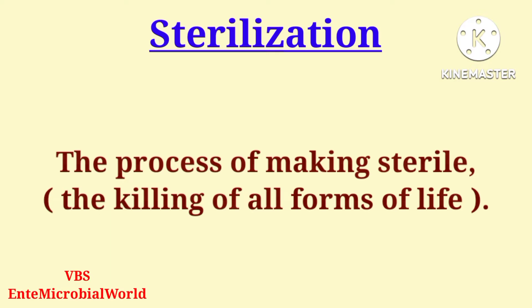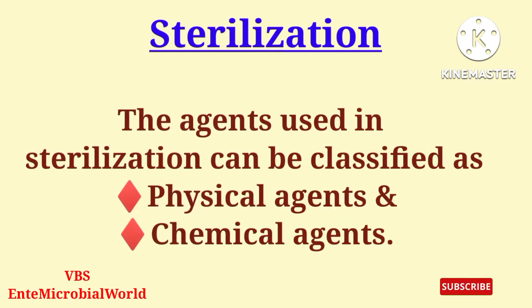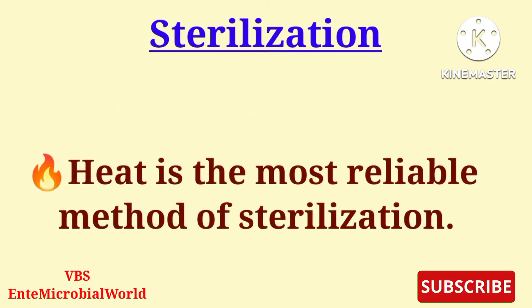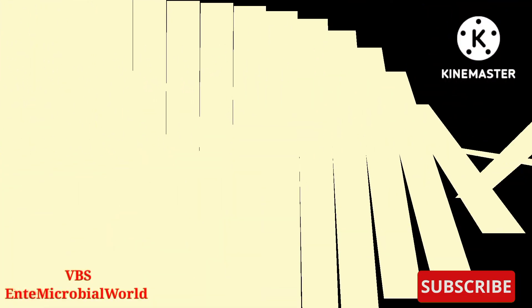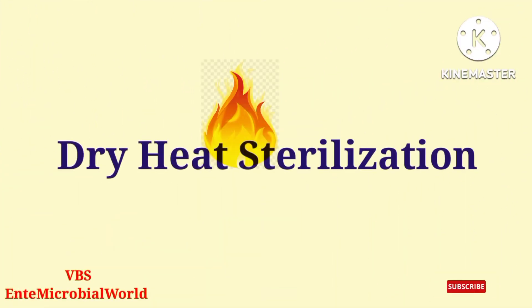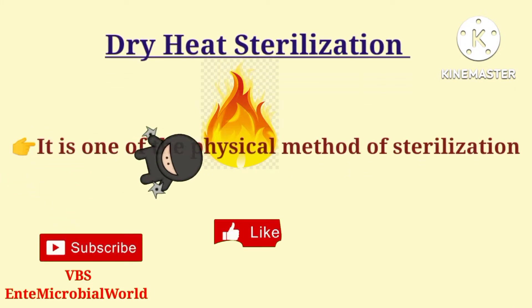The agents used in sterilization can be classified as physical agents and chemical agents. Heat is the most reliable method of sterilization. Practical procedures by which it is employed are conveniently divided into two categories: dry heat sterilization and moist heat sterilization.